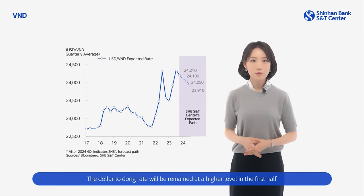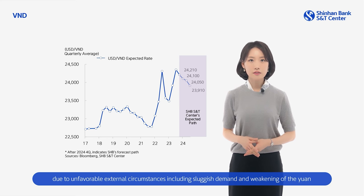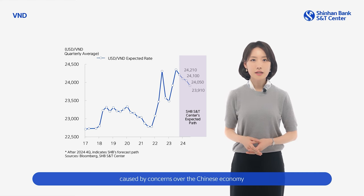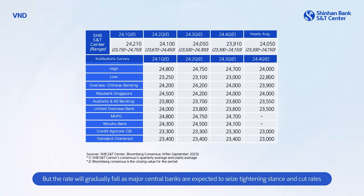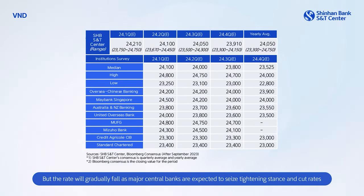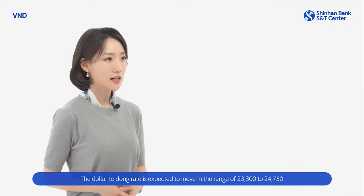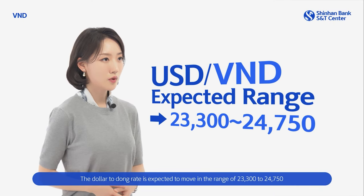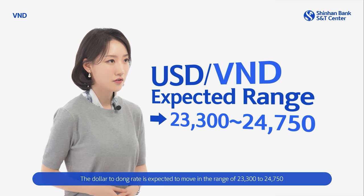The dollar-to-dong rate will remain at a higher level in the first half due to unfavorable external circumstances, including sluggish demand and weakening of the yuan caused by concerns over the Chinese economy. But the rate will gradually fall as major central banks are expected to cease tightening and cut rates. Yet due to the delay in the Fed's rate cuts and uncertainties regarding the Chinese economy, the rate may fall slower than expected. The dollar-to-dong rate is expected to move in the range of 23,300 to 24,750 dong.